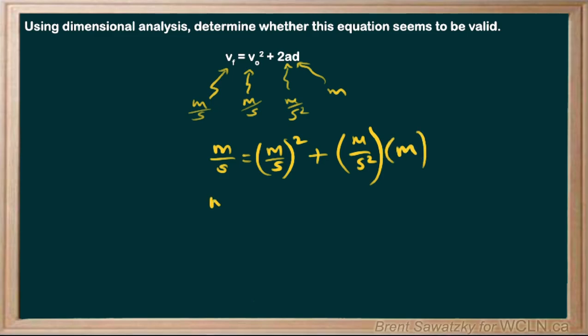So on the left, nothing to do there. On the right, we could write this as meters squared per second squared. And we're adding.